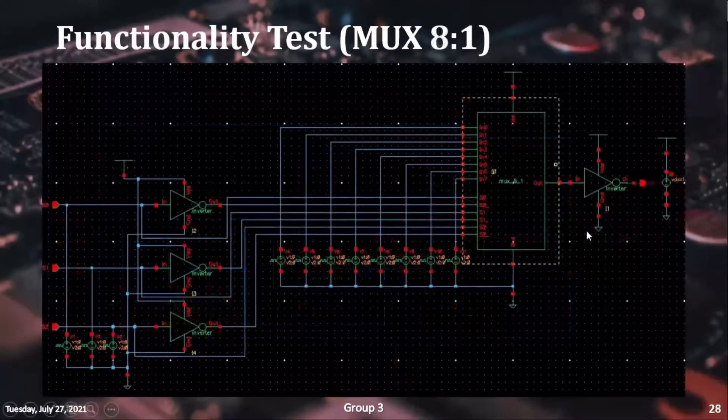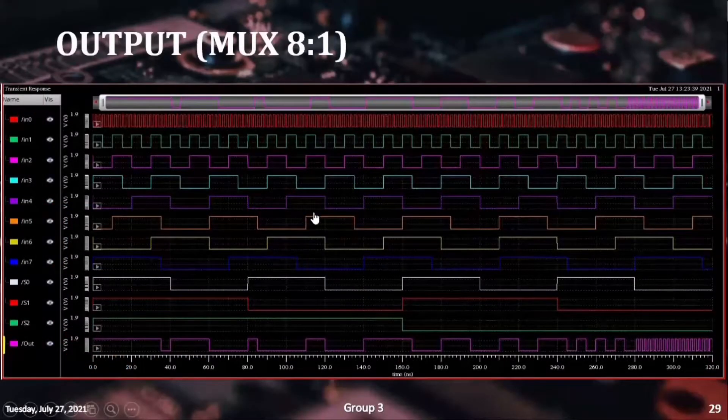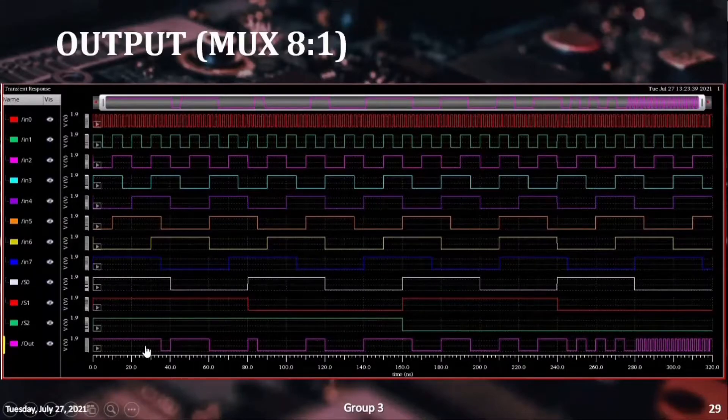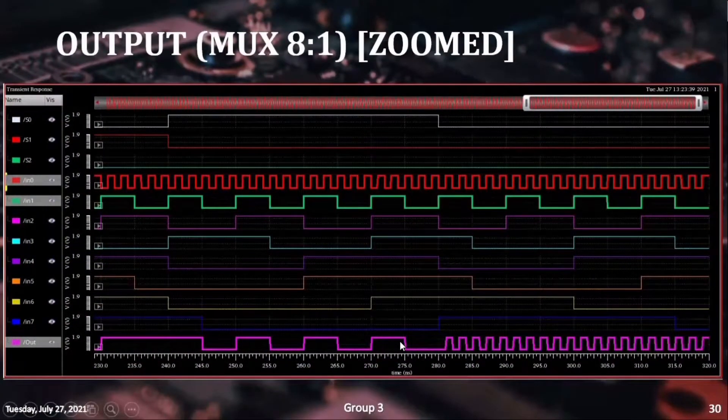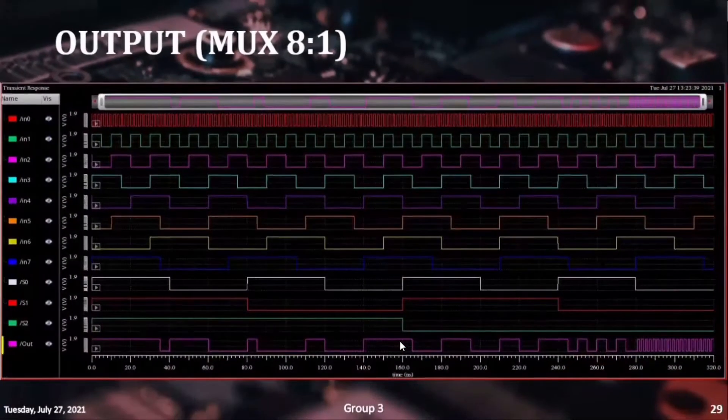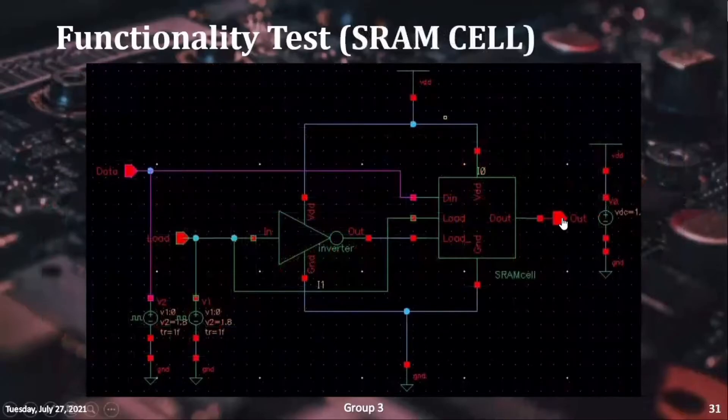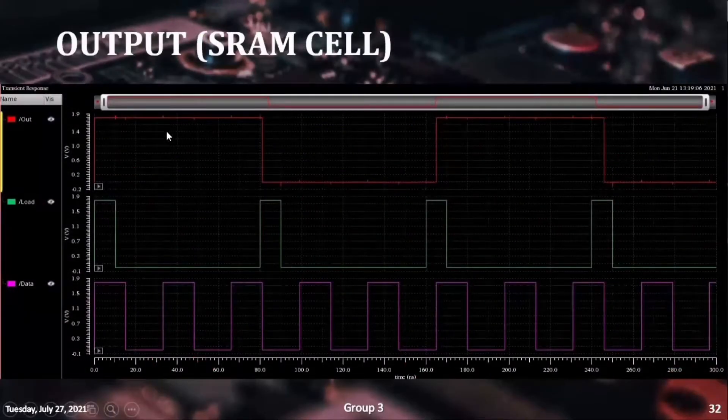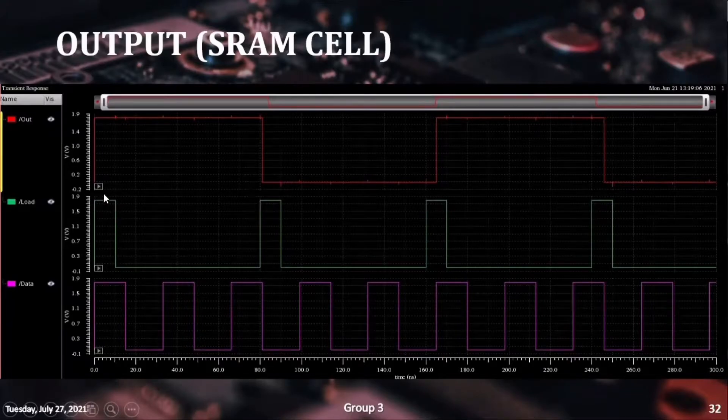And in the case of the 8-to-1 multiplexer test circuit, we can see how inputs having different frequencies are passed onto the output channel without interfering with each other. In the SRAM cell test circuit, we see that the cell is able to hold the data that was loaded while load pin was high.